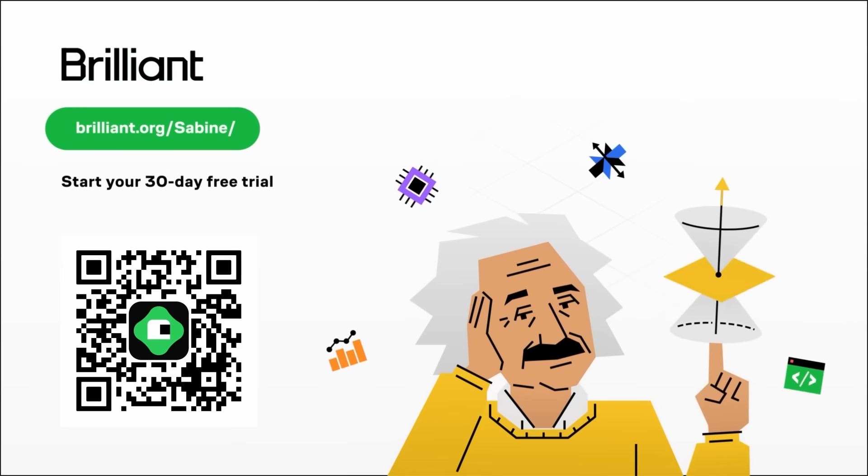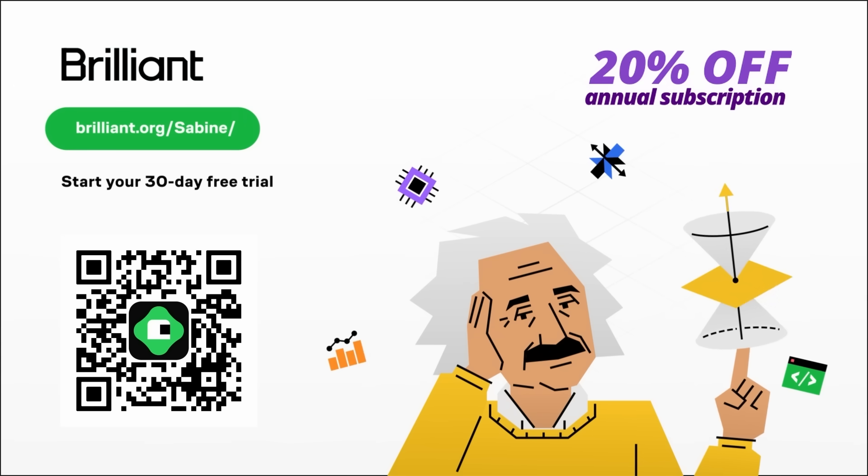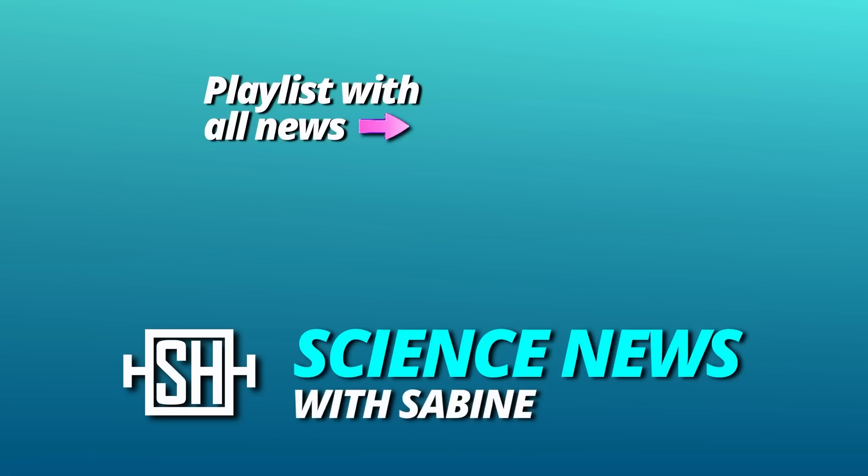Sounds good. I hope it does. You can try Brilliant yourself for free if you use my link brilliant.org slash sabine or scan the QR code. That way you'll get to try out everything Brilliant has to offer for a full 30 days and you'll get 20% off the annual premium subscription. So go and give it a try. I'm sure you won't regret it. Thanks for watching. See you tomorrow.